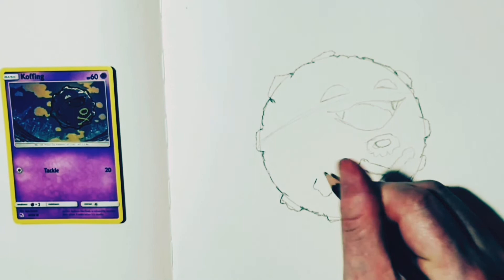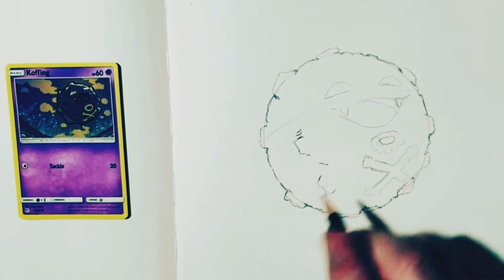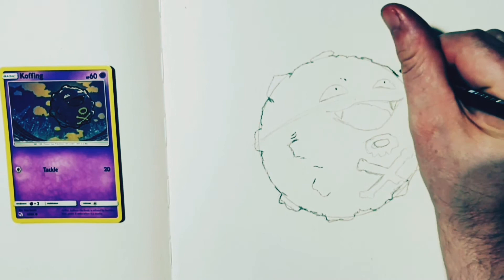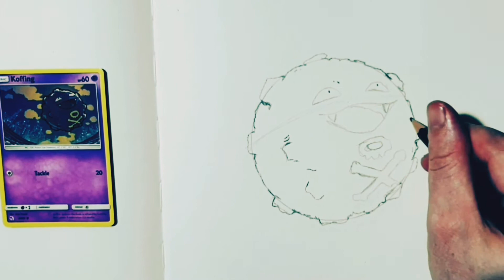Now I put in some other details there as well, of bits and pieces coming out. And whenever the shading does come in, it kind of brings out quite a bit of Koffing, that there's bits and pieces coming out of him.